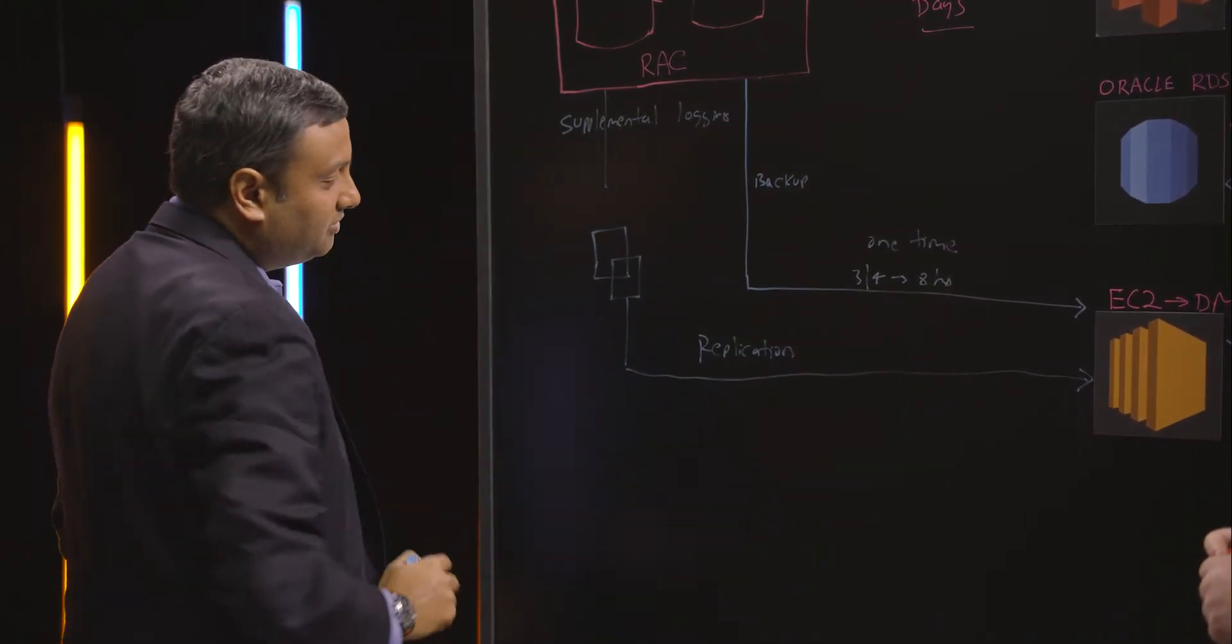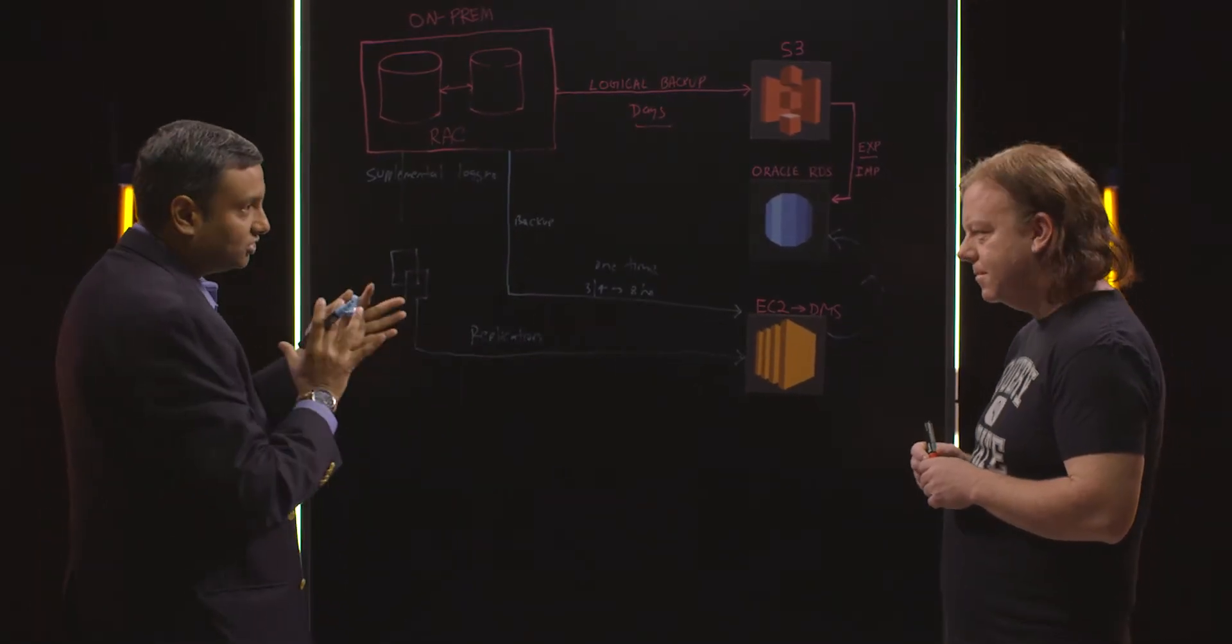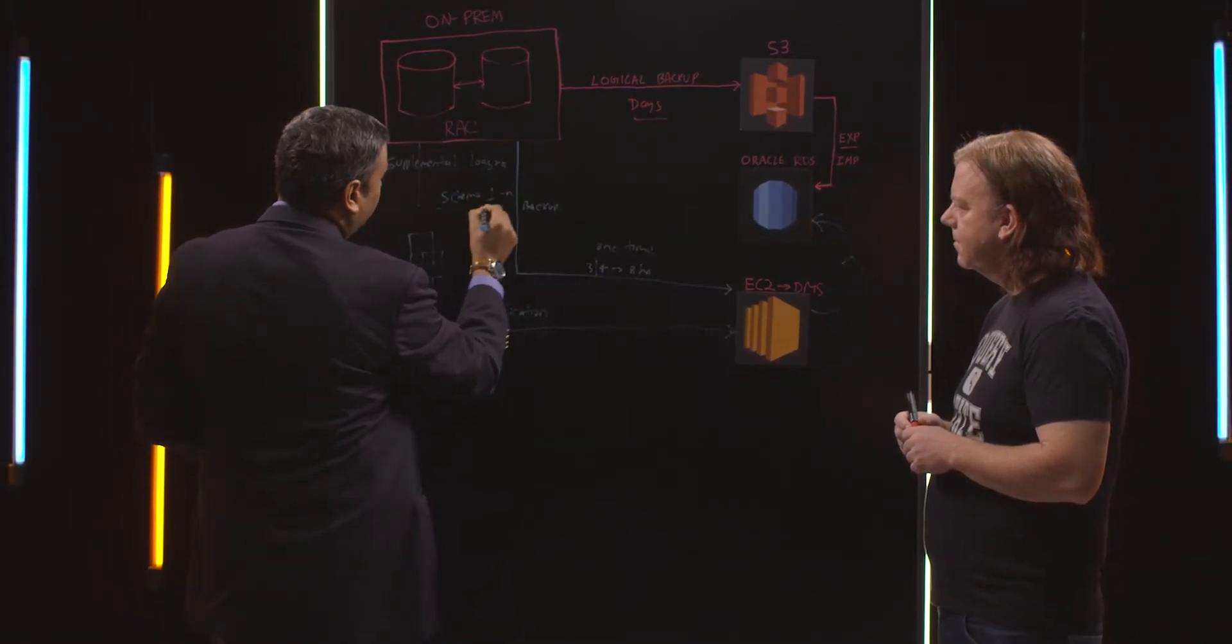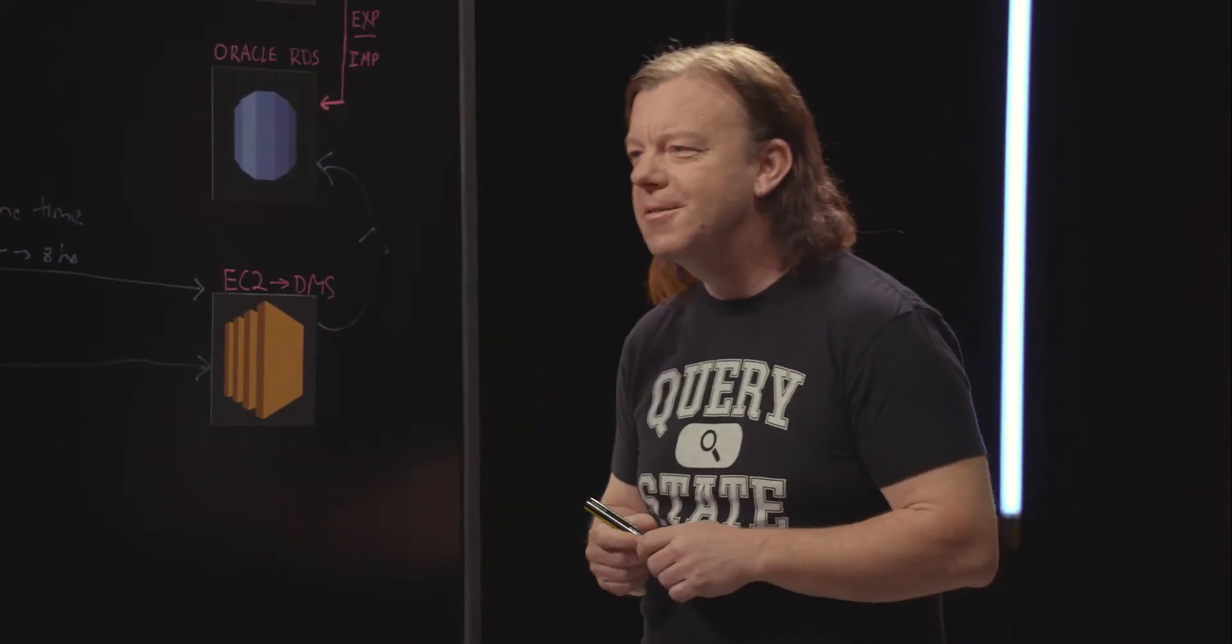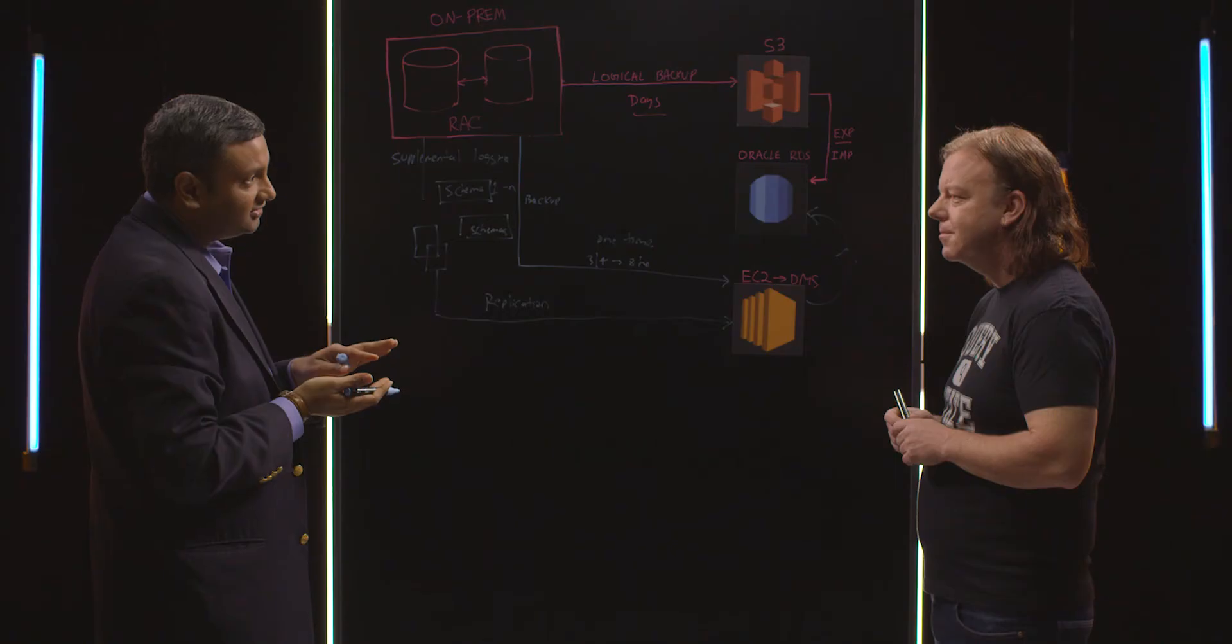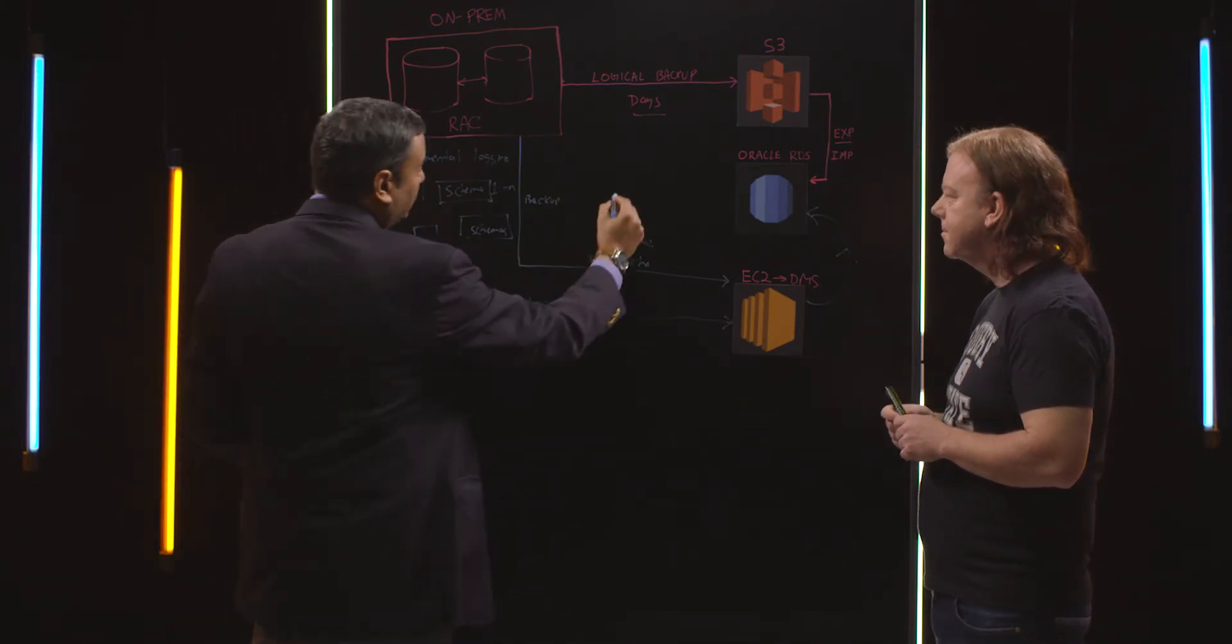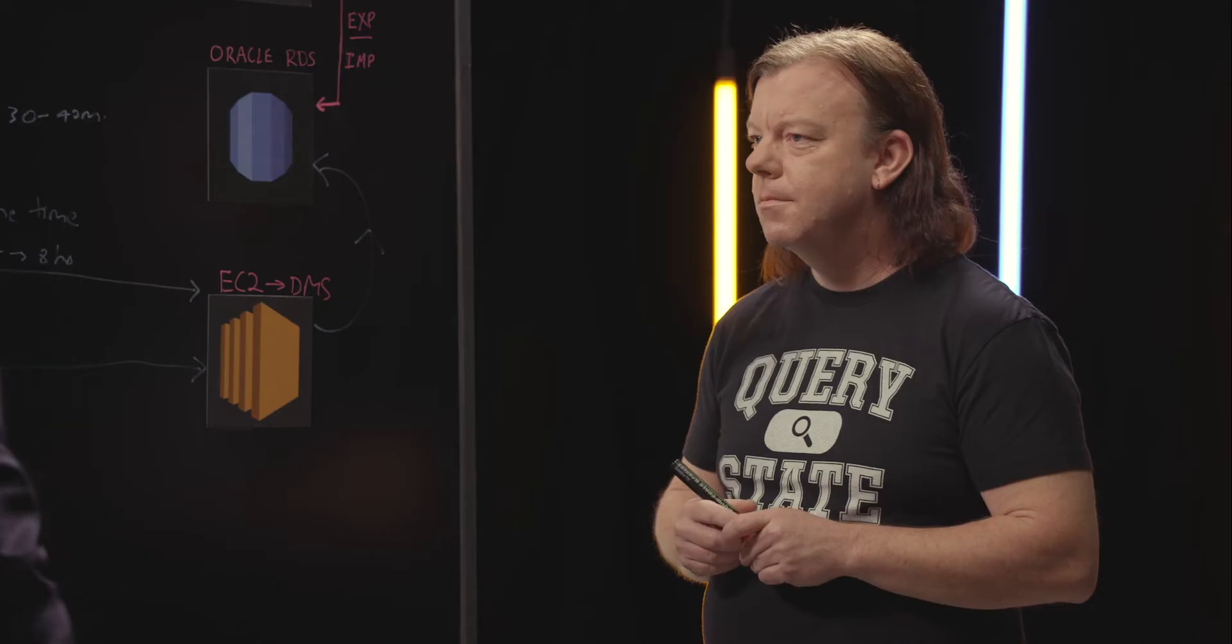When we started with replication, we started with what's called a schema in an Oracle database. Schema is essentially a collection of tables, and they had several schemas. We created jobs which were schema-based. This works if your schemas are small sizes, but if you're talking about millions of transactions in a table, the schema-based replication was extremely slow and was not meeting the 30 to 40 minute threshold that they had set up.